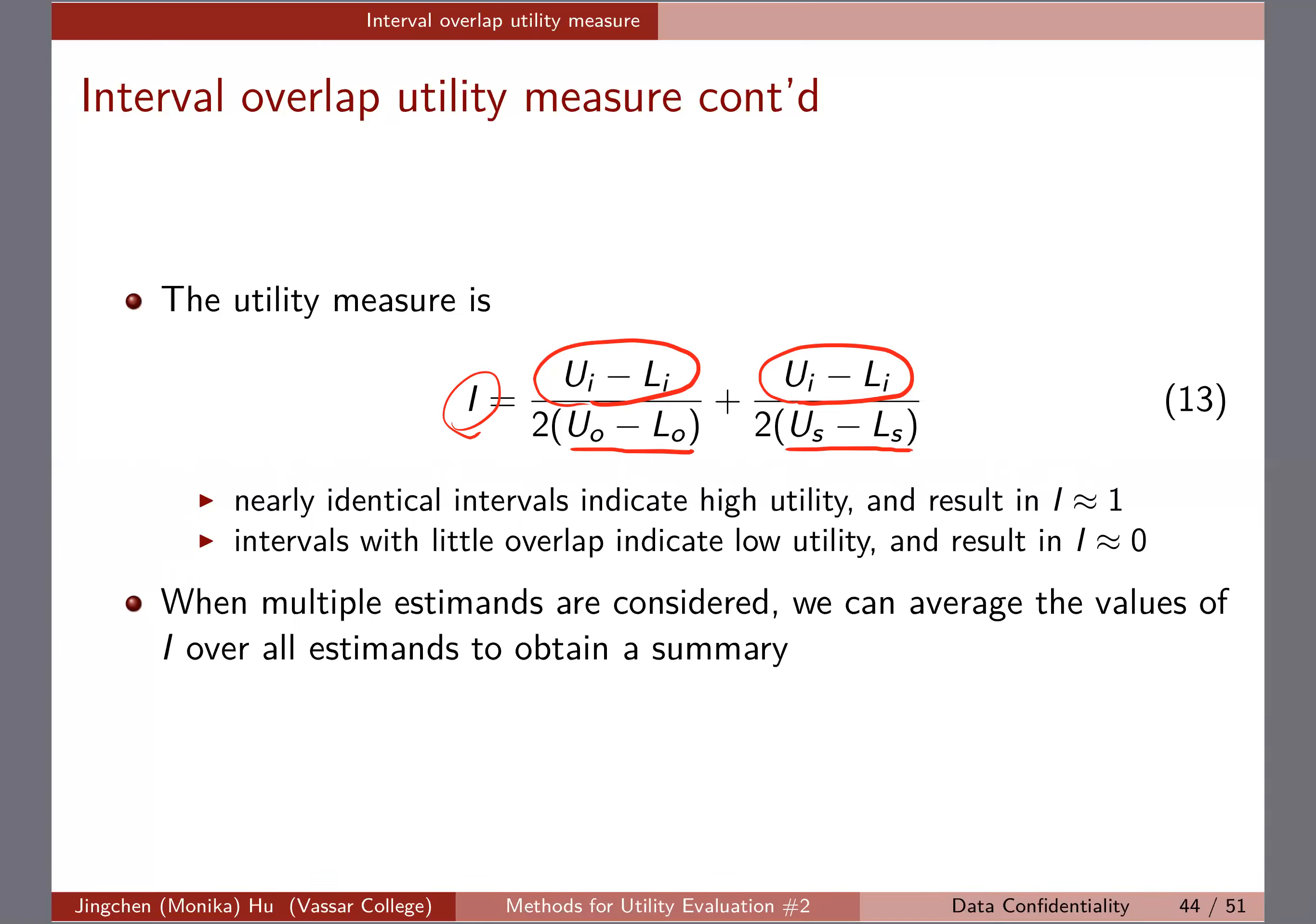If the two are very similar—if U_o, L_o and U_s, L_s are very similar to each other—then this I will be closer to one because this will be about one-half and this will be about one-half. But if you have intervals with little overlap, then I will be closer to zero. That would indicate low utility.